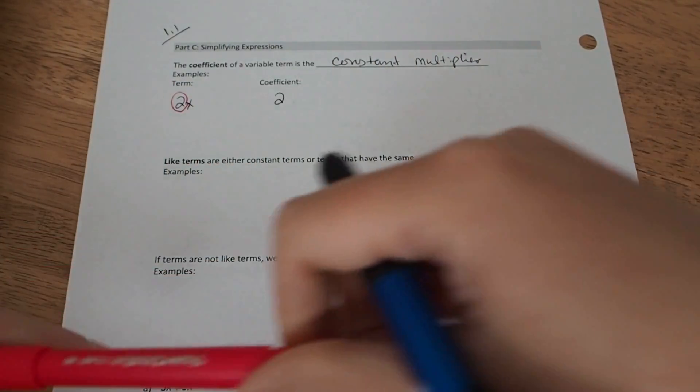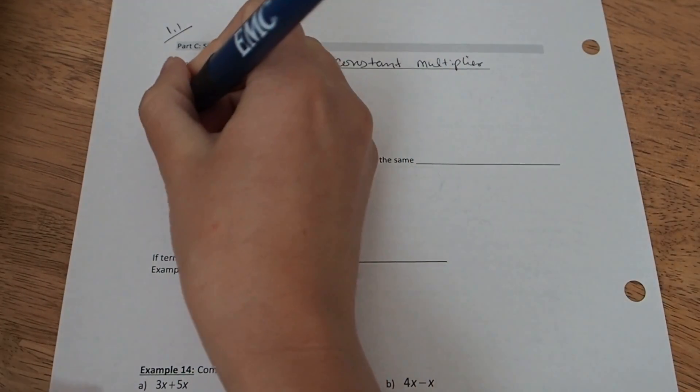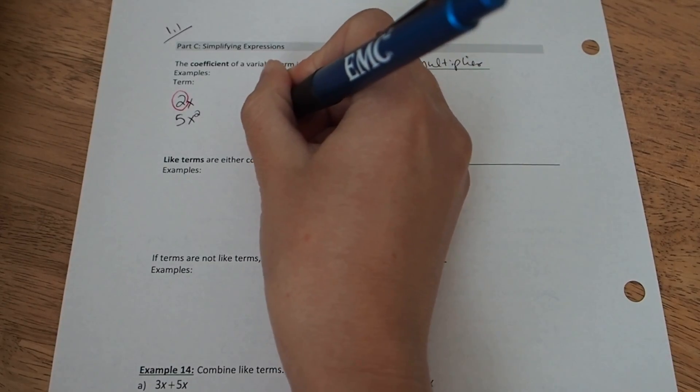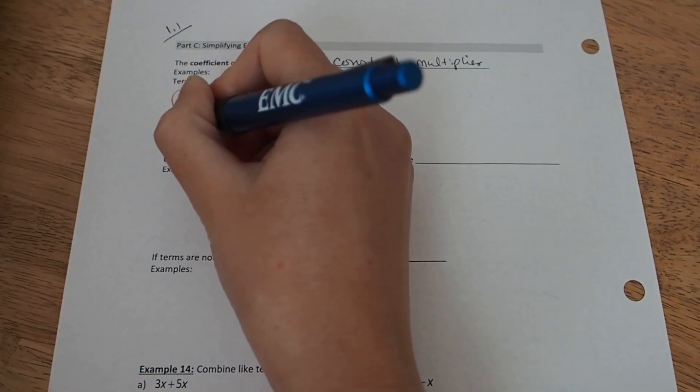If I have another term, like for example, 5x squared, once again, the coefficient in this one is 5. It's the number being multiplied by the variable.